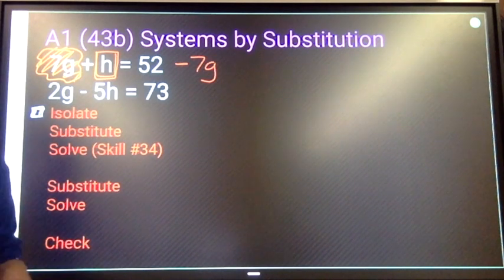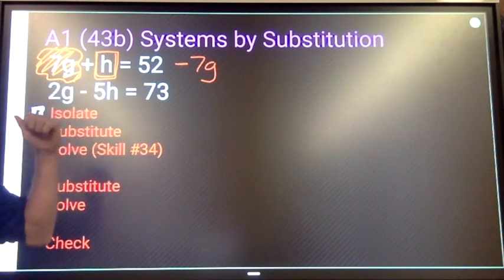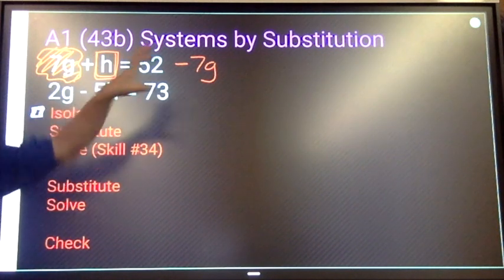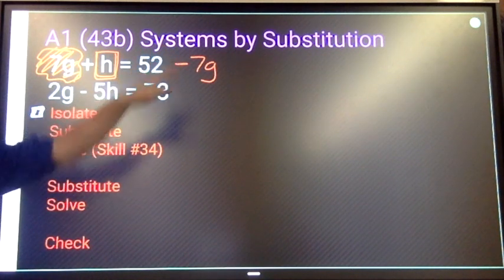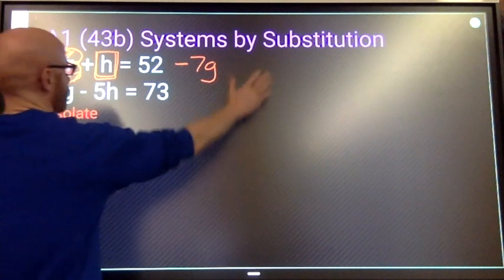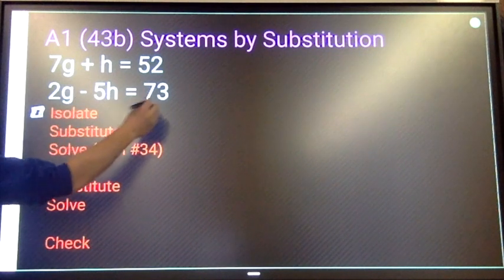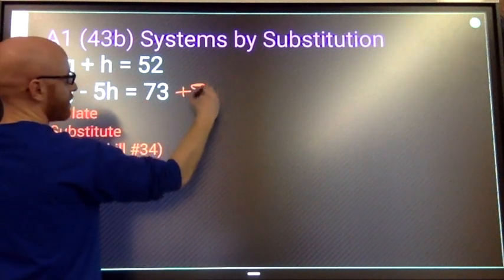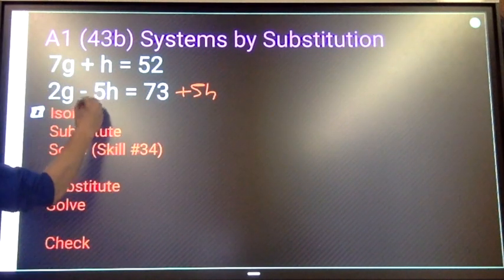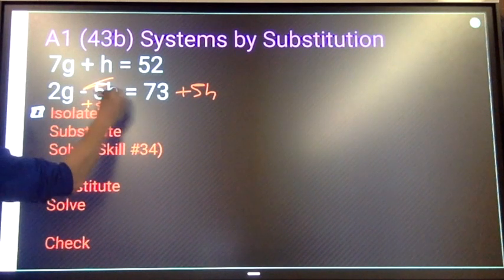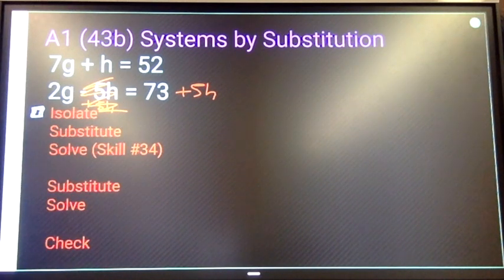Your other option is, like I said, I can add 5h to both sides to make that disappear, and then I would need to divide by 2.